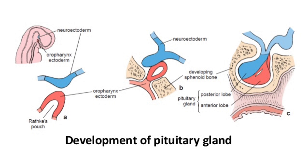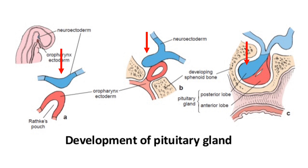This picture shows the two parts of the pituitary gland which come from two different embryologic origins. This is how the anterior lobe or adenohypophysis develops, and this is how the posterior lobe or neurohypophysis develops.